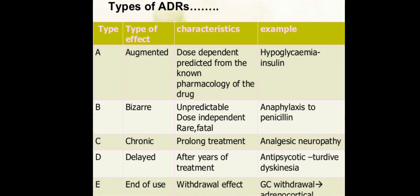Type C is chronic, meaning it occurs with prolonged treatment. Type D occurs after years of treatment — for example, with antipsychotic drugs you may develop tardive dyskinesia. Type E is end-of-use reactions — when you stop using a particular drug you get withdrawal effects, for example glucocorticoid withdrawal from adrenocortical drugs.